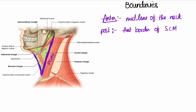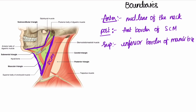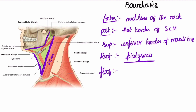The superior border is the inferior border of the mandible. The roof of this triangle is the platysma muscle, and the floor is formed by the pharynx, larynx, and the thyroid.